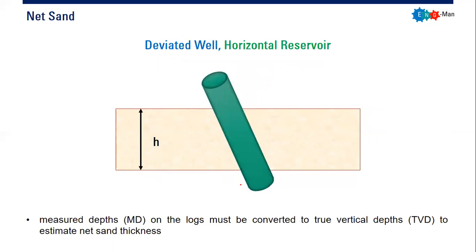For a deviated well in a horizontal reservoir, we have the reservoir horizontally and the deviated well here. The measured depths (MD) on the logs must be converted first to true vertical depths (TVD) to estimate net sand thickness. So be careful: the MD needs to be converted to TVD for this deviated well case.